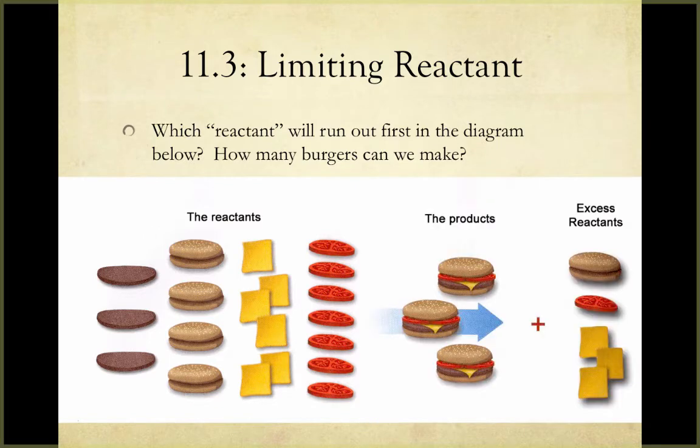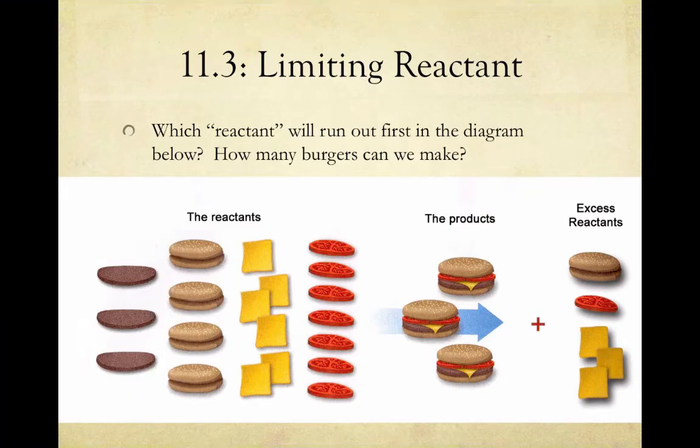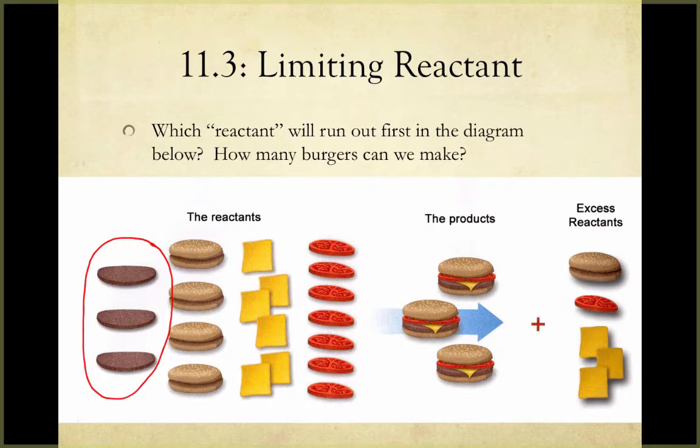Welcome back. You should have determined that you'll be able to make three complete cheeseburgers, because our burger patties will run out first. Therefore, in this case, our burger patties were our limiting reactant — they limited how many burgers we were able to make.